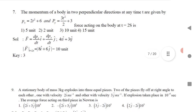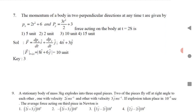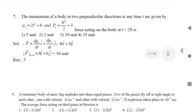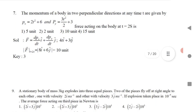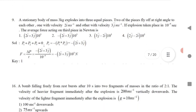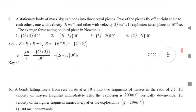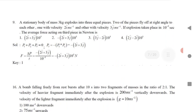Question 10: The momentum of a body in two perpendicular directions — Px and Py are given as functions of time. Use F = dp/dt. Differentiate Px to get 4t and differentiate Py to get 3t. Find the magnitude at t = 2 seconds by substituting, and you get the answer: 10 units.